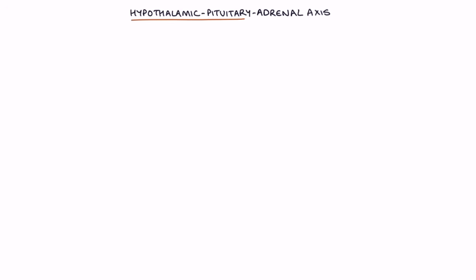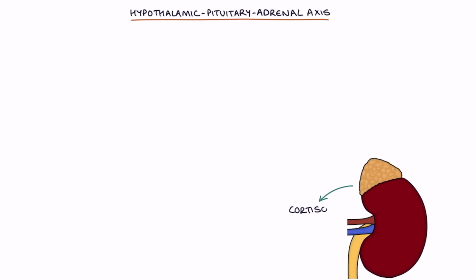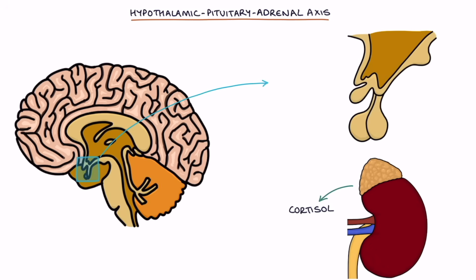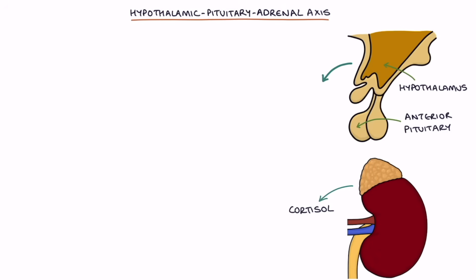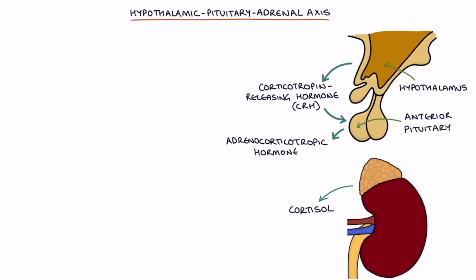Let's go through the hypothalamic pituitary adrenal axis. The release of cortisol by the adrenal glands is controlled by two structures in the brain called the hypothalamus and the pituitary gland, specifically the anterior part of the pituitary. The hypothalamus releases corticotropin releasing hormone or CRH. CRH stimulates the anterior pituitary to release adrenocorticotropic hormone or ACTH. ACTH stimulates the adrenal glands to release cortisol.